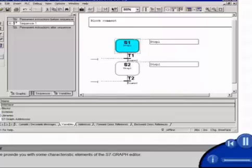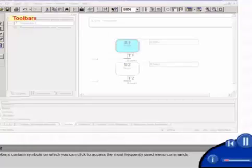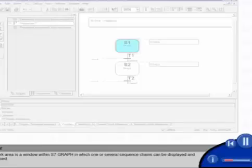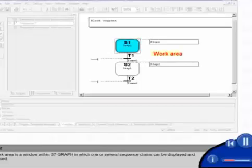First, we provide you with some characteristic elements of the S7 graph editor. The toolbars contain symbols on which you can click to access the most frequently used menu commands. The work area is a window within S7 graph in which one or several sequence chains can be displayed and processed.